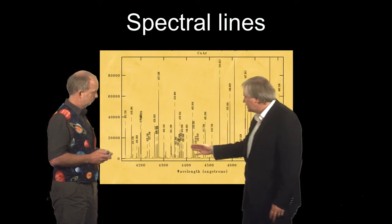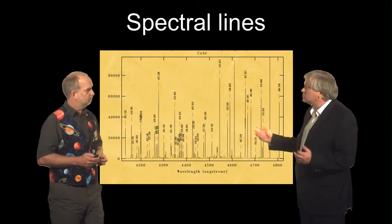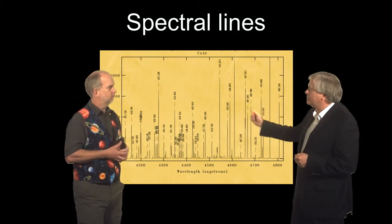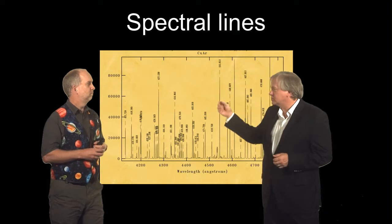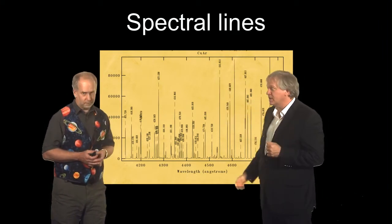And there are literally, in this case, hundreds of these spectral lines, as we like to call it, emerging from copper and argon. And it turns out if we made a gas of hydrogen or something else, you get a different set of lines depending on what it's made out of.